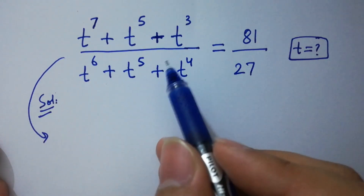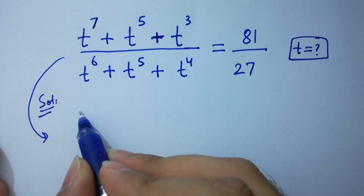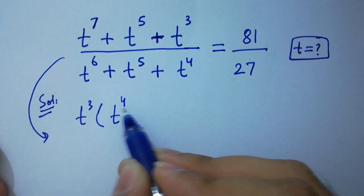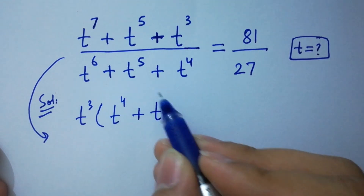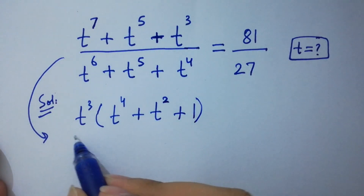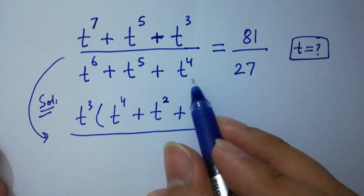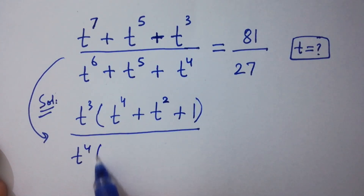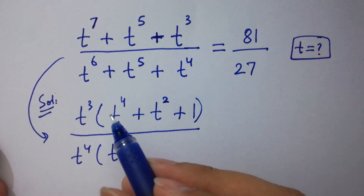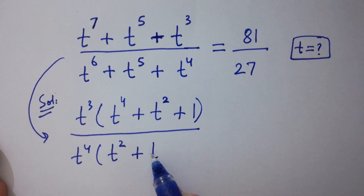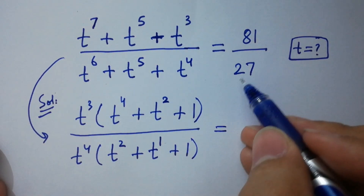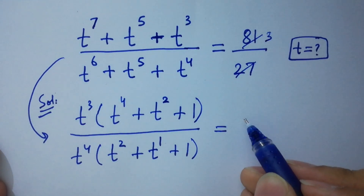To solve this, in the numerator, t³ can be common: t³ times (t⁴ + t² + 1), because 4+3=7 and 3+2=5, plus 1. In the denominator, t⁴ can be common: t⁴ times (t² + t + 1), because 4+2=6 and 4+1=5, plus 1. This equals 81/27, which simplifies to 3.